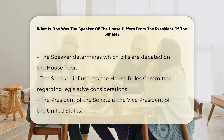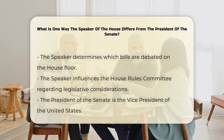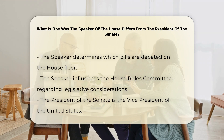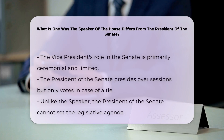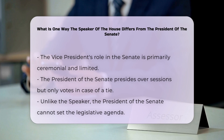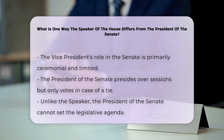In contrast, the President of the Senate is the Vice President of the United States. The Vice President's role in the Senate is largely ceremonial and limited. The Vice President presides over the Senate but only casts a vote in the event of a tie. Unlike the Speaker of the House, the Vice President does not have the authority to set the legislative agenda or determine which bills are debated.